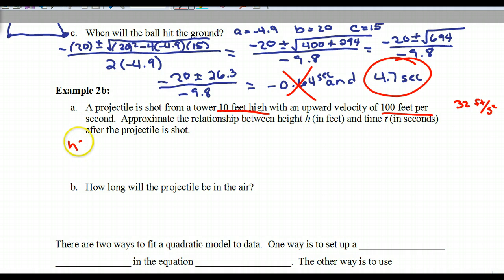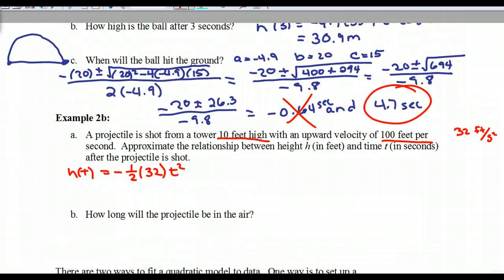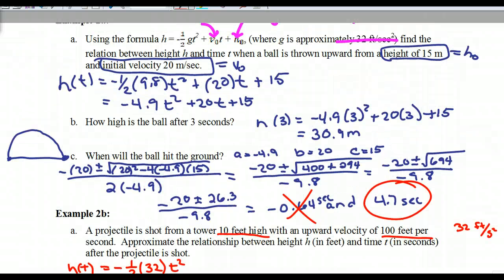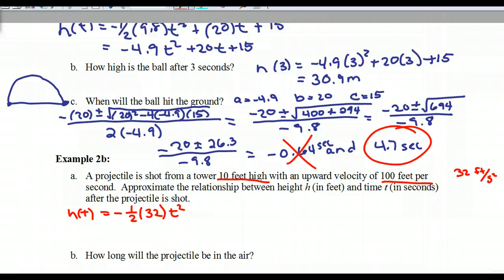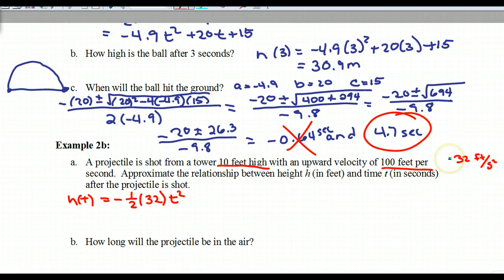So if I write this out, I have H of T equals negative 1 half times 32. So 32, if you go back to the top of the page, you'll see that the original—see right here? There's your negative 1 half. Good question. 32 is our G, which is our gravity. And then T squared. Then we're going to have our original V-naught on this, which is 100, so it'll be plus 100 T. And then we went 10 feet high, so plus 10. So there's our original equation. If I were to simplify this first part, it's just going to be negative 16 T squared plus 100 T plus 10.